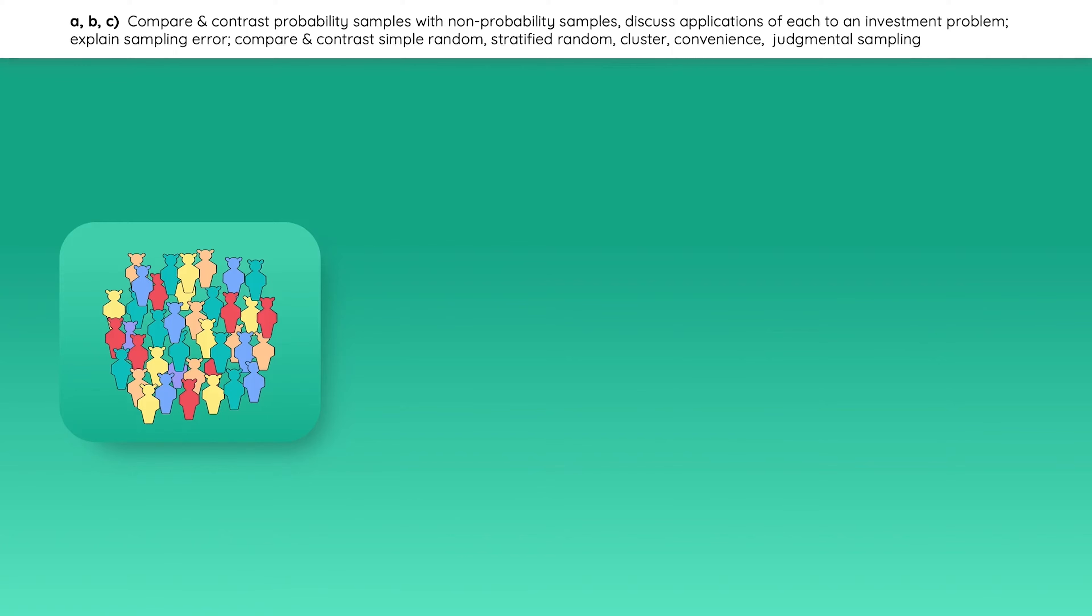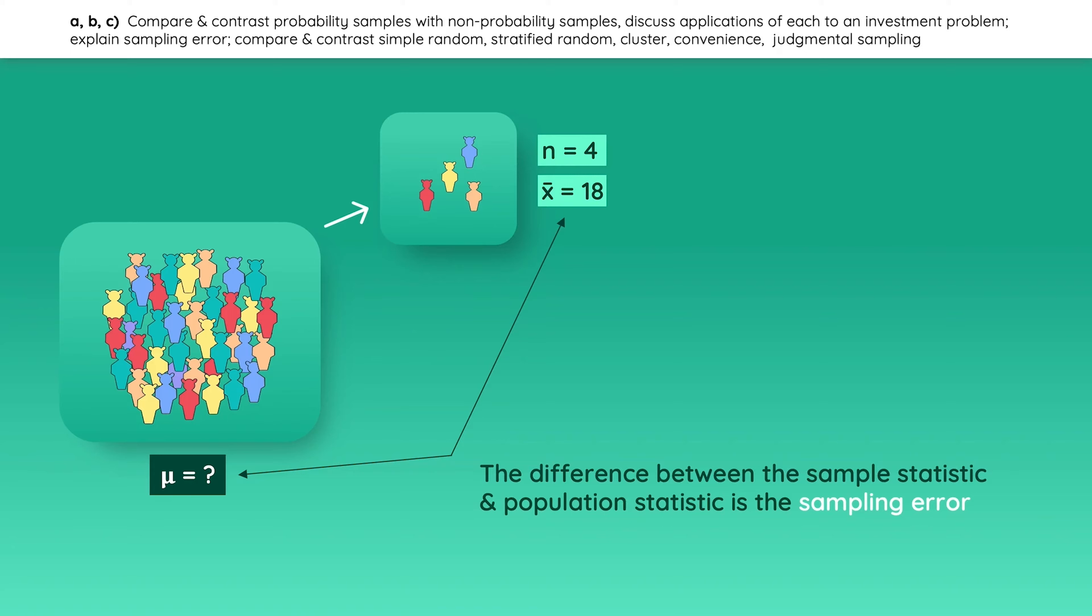Now let's talk about the sampling error. Assume that you want to estimate the average age of the people in this population. Asking every single person for their age to calculate the average is unrealistic. So instead, you select a sample of size n and get the average age of the people in that sample. Let's assume it was 18 years old. Obviously, the sample is not a perfect representation of the population. So the difference between the sample's average age and the population's average age is called the sampling error. In other words, it is the difference between the sample statistic and the quantity it is intended to estimate.